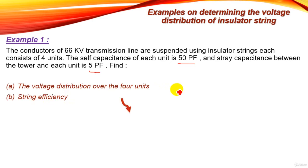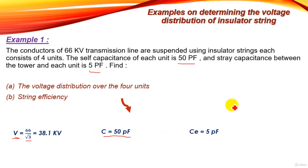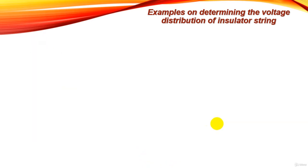First, the givens: the total voltage is 66 kilovolt, but this is line-to-line voltage. To convert to phase voltage, we divide 66 kV by root 3, obtaining 38.1 kilovolt. The self-capacitance equals 50 picofarad and stray capacitance equals 5 picofarad. From these two values we can deduce the m factor: m equals 5 over 50, so m equals 0.1.